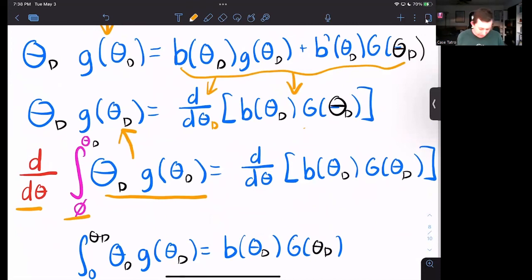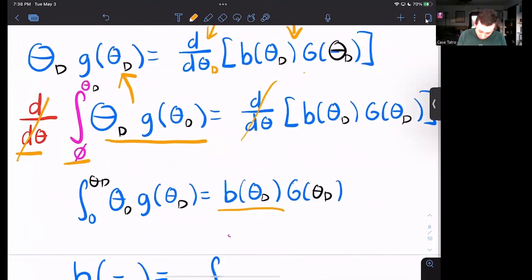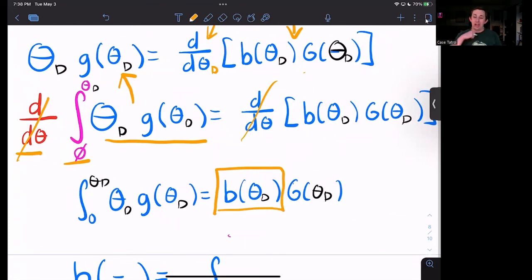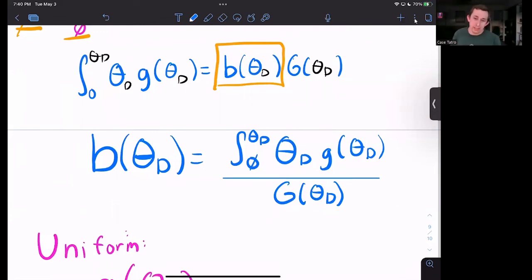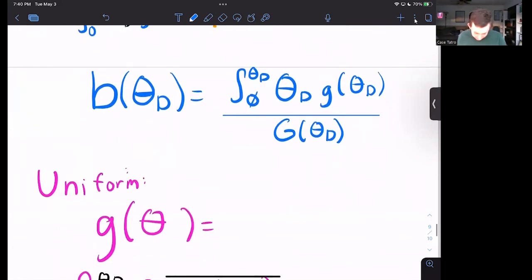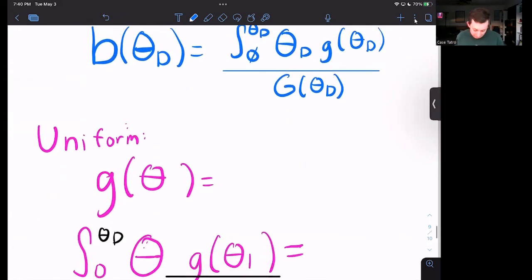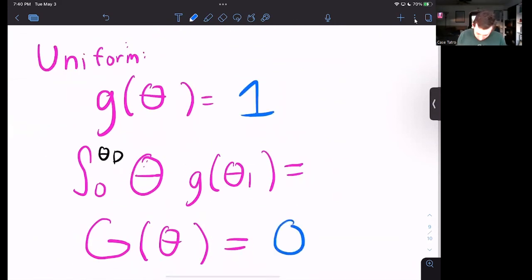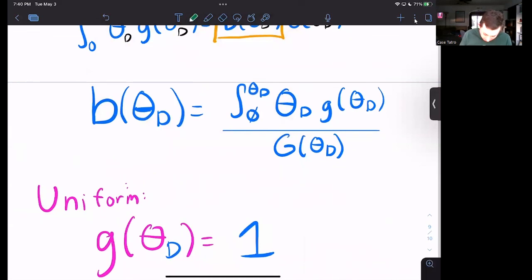Now I am solving for the bid function. The whole thing I'm trying to do is I'm trying to show that Dave's optimal bid as a function of valuation is just going to be some function of his actual valuation. Now we're using the uniform distribution. So the PDF of the uniform distribution is pretty easy. It's just one. And the CDF is just equal to theta D. That means that this guy right here is just going to be one half times theta D quantity squared. So if I plug that in here, I'm just going to get that B star of theta D is just going to be equal to one over two times theta D. And now I am done.